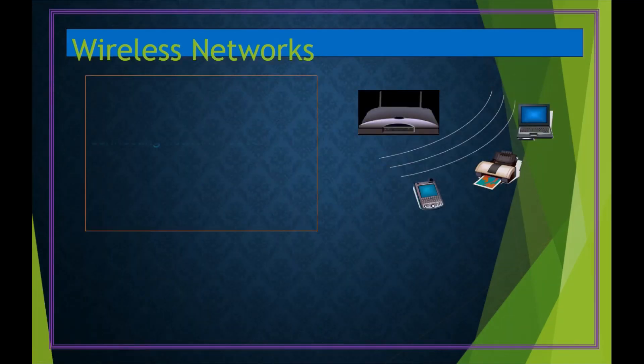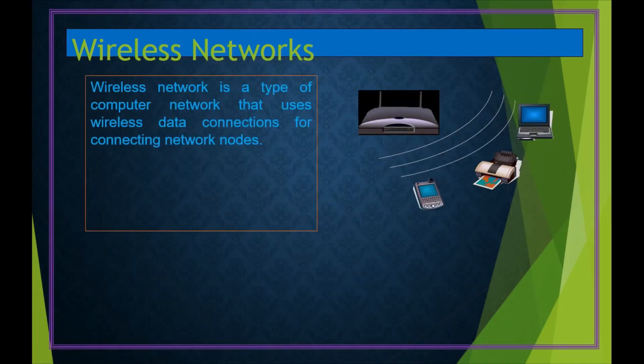So far we have discussed LAN and WAN, which are both wired connections. Wireless is purely wireless — for example, using a Wi-Fi connection on your mobile or laptop to communicate over the network.